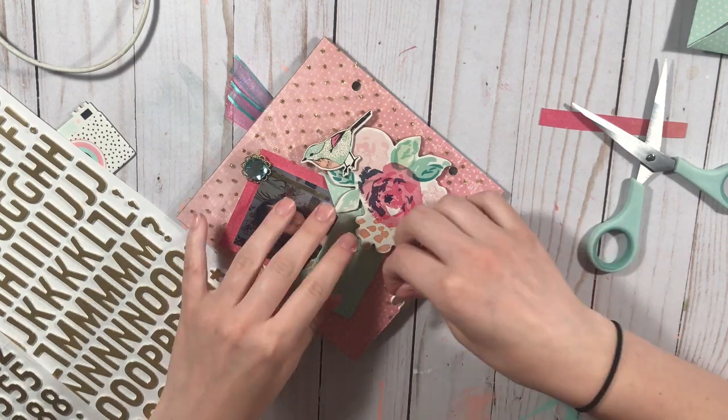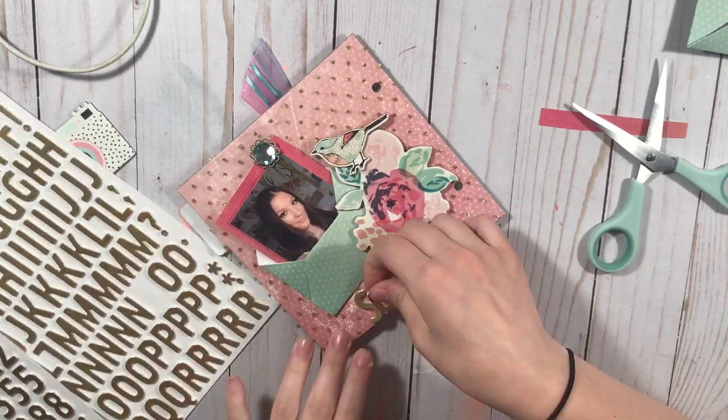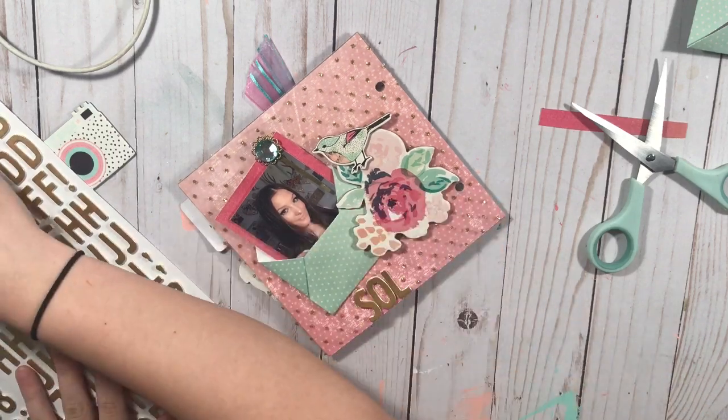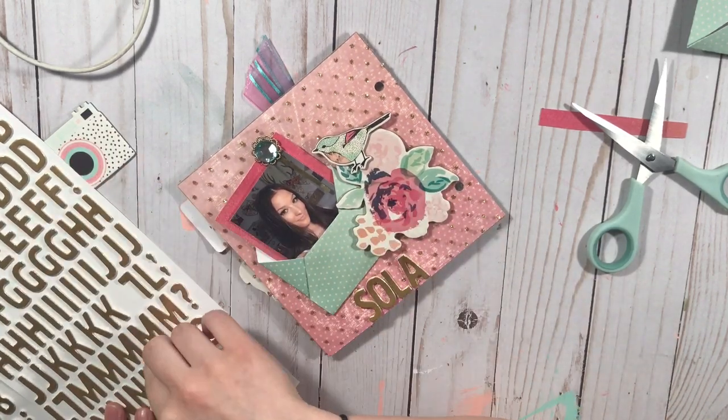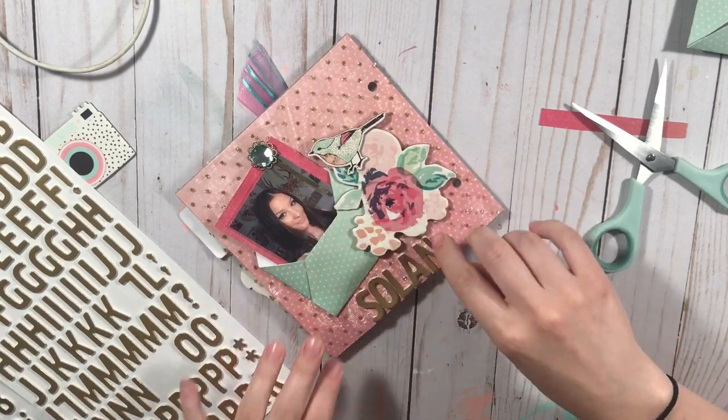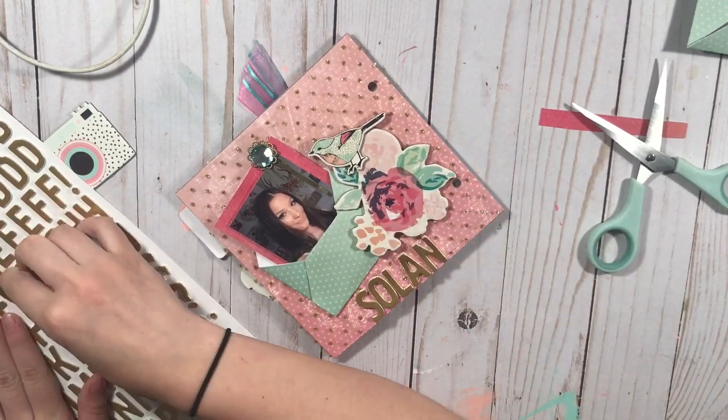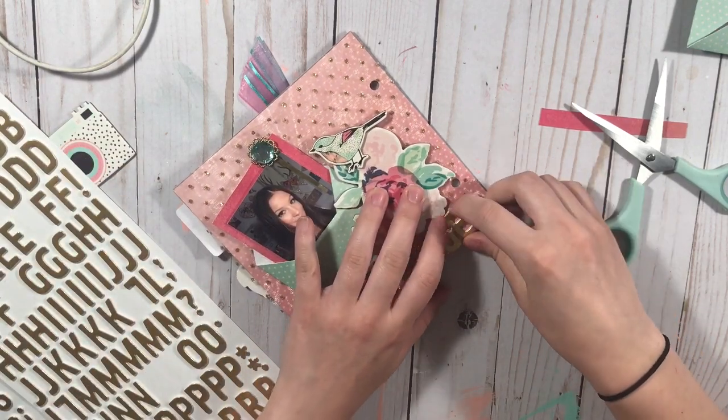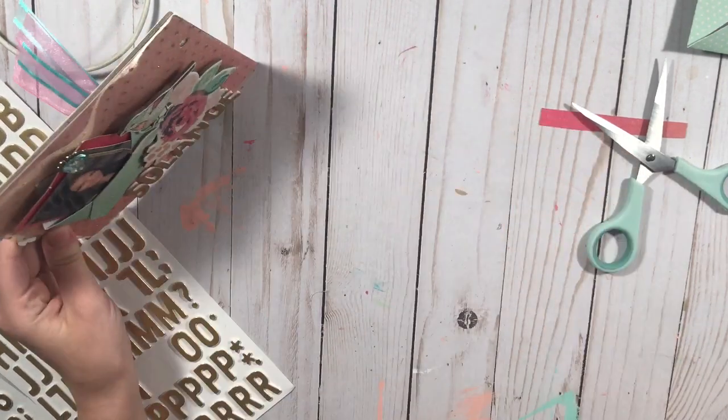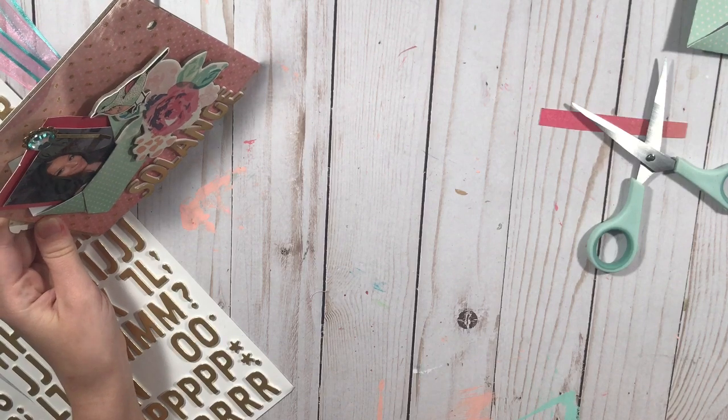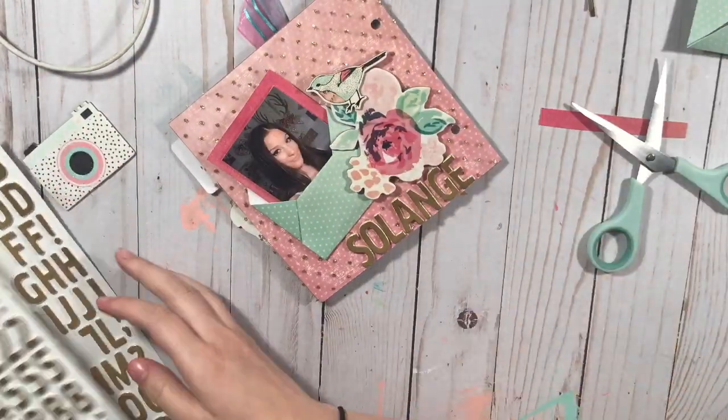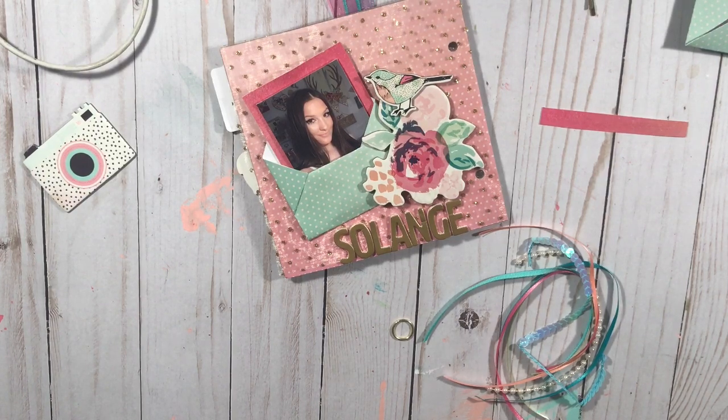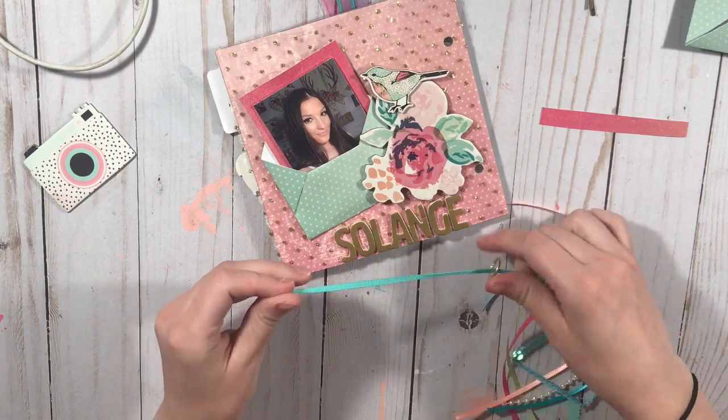Now I'm just putting my name with some gold thickers. These are from Dear Lizzie, and I buy these at Michaels. They're like $5 but you can always use a coupon. And I'm just placing them down now, but I do end up going back and adding hot glue just to make sure they stick, because I don't trust thickers at all. They always fall. I hate when you buy thickers and they're all messed up in the packaging.